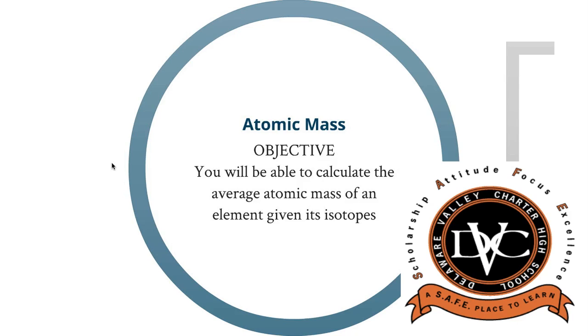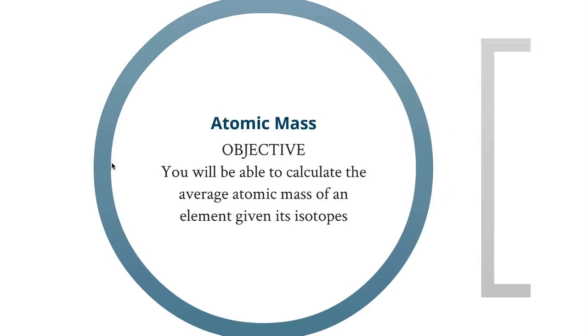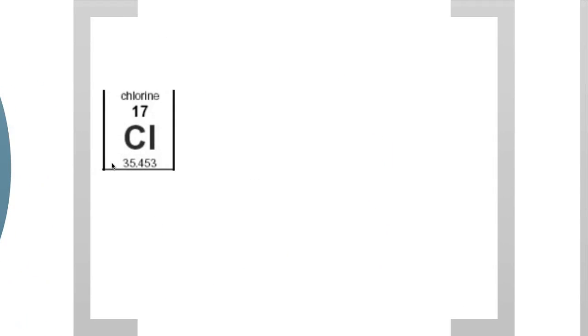You will be able to calculate the average atomic mass of an element given its isotopes. Let's look at chlorine. It has 17 protons and 18 neutrons, so its mass number is going to be the protons plus the neutrons: 17 plus 18 equals 35. 35 is its mass number, so we call that chlorine-35.